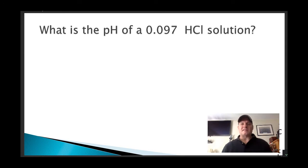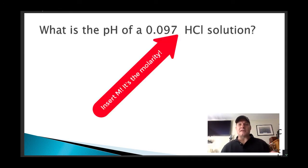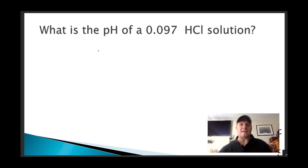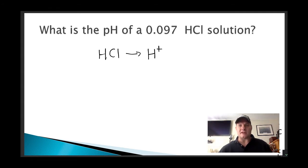Here's an example: what is the pH of a 0.097 molar hydrochloric acid solution? Hydrochloric acid is one of our strong acid solutions, so we know it's going to dissociate completely. HCl is going to dissociate into hydrogen ions, which we care about because we're doing acid-base chemistry, and chloride ions, which are our spectators.